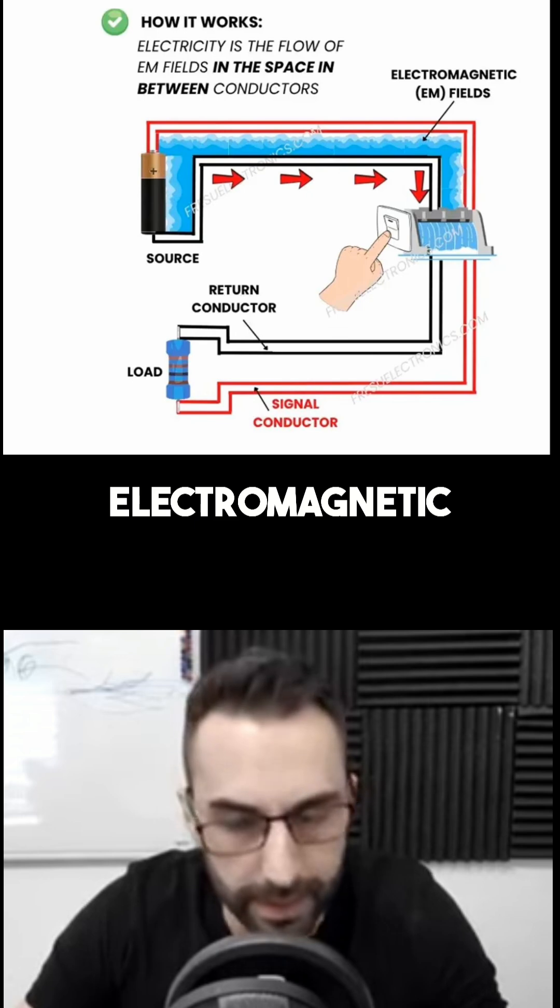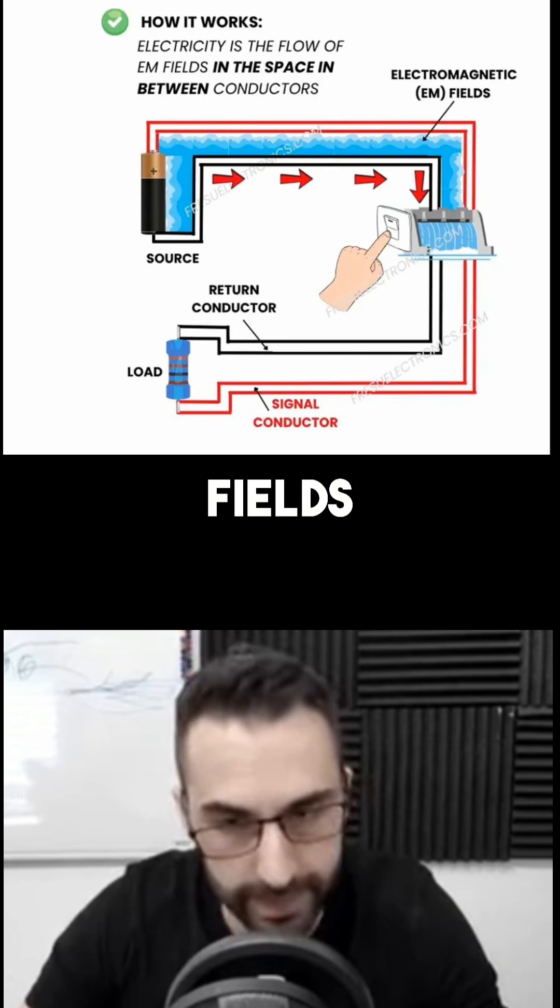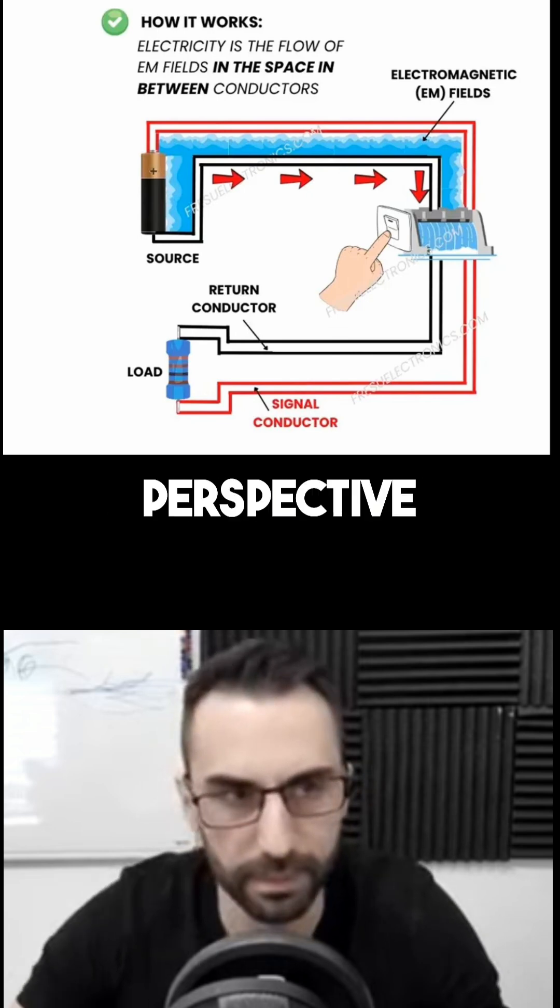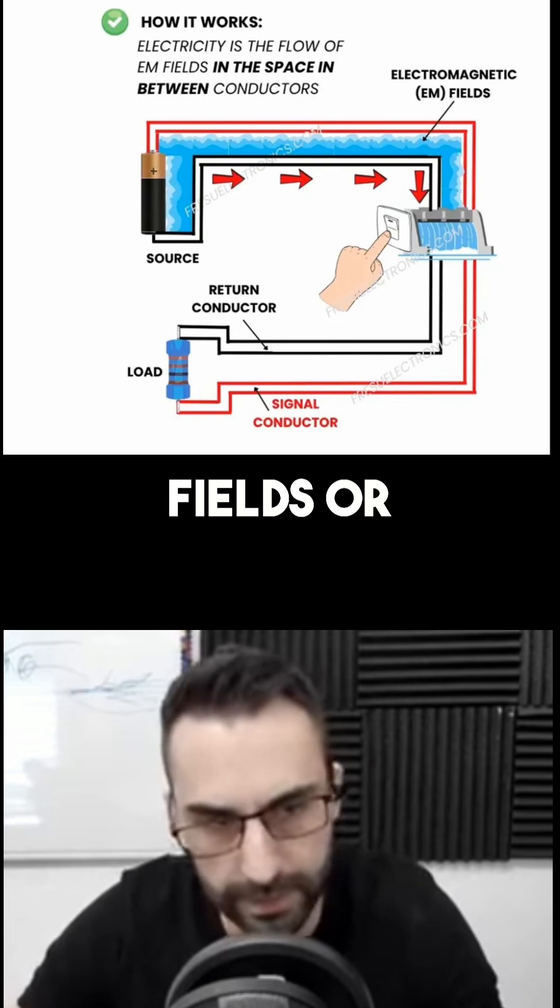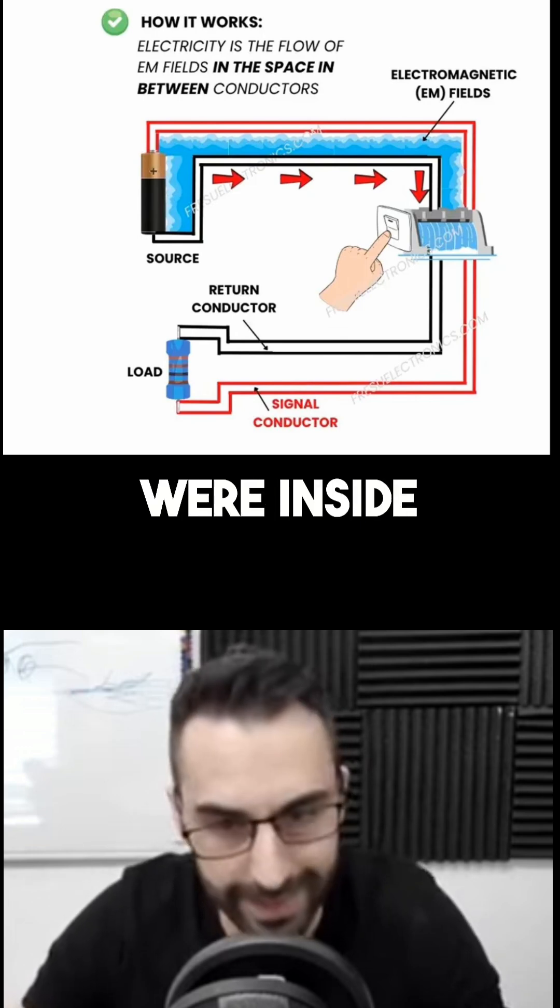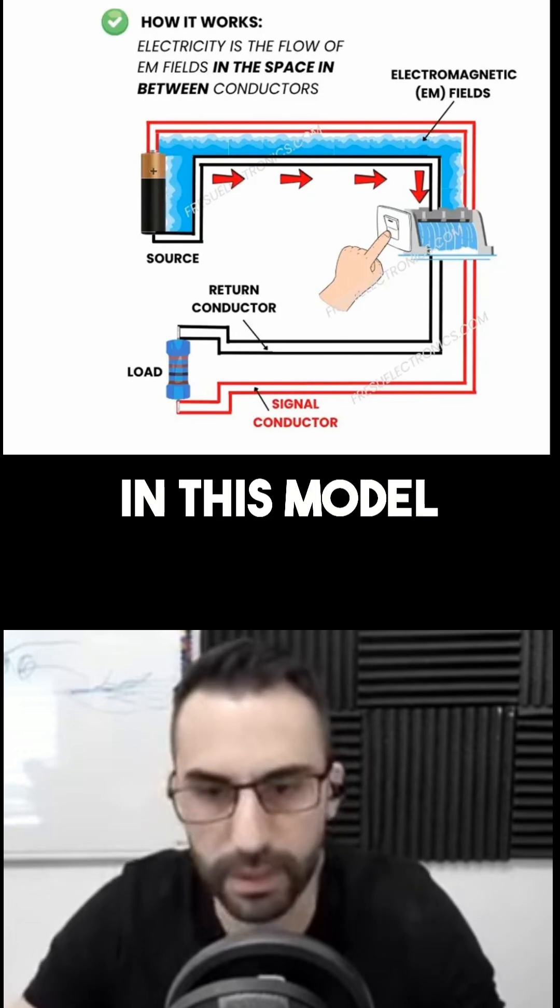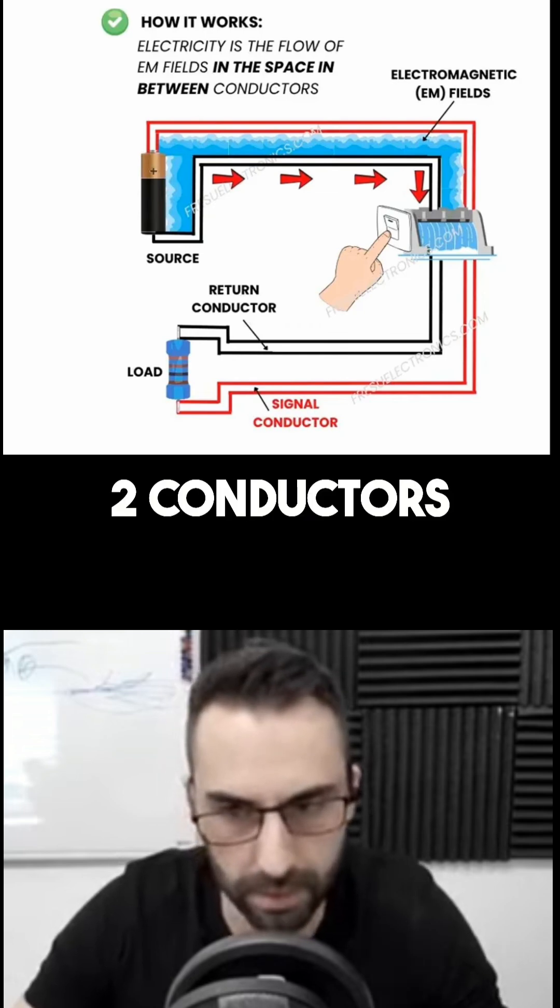And then we have the electromagnetic energy or electromagnetic fields. You can see how it changes the perspective. In the first model, the electrons were inside the conductor. In this model instead, the fields are in between the two conductors.